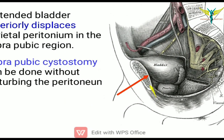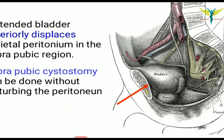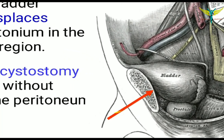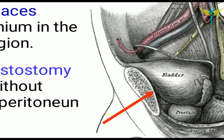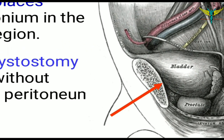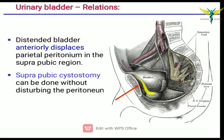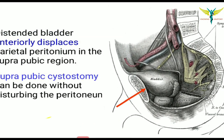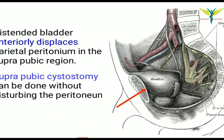If the bladder is distended anteriorly, it displaces the parietal peritoneum in the suprapubic region. Therefore, suprapubic cystostomy can be done without disturbing the peritoneum.